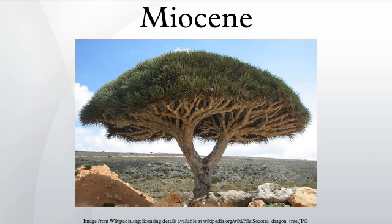The Miocene is the first geological epoch of the Neogene Period and extends from about 23.03 to 5.332 million years ago. The Miocene was named by Sir Charles Lyell.